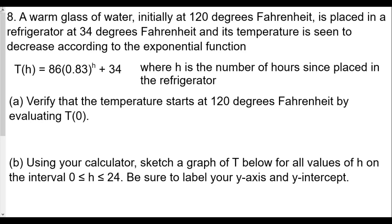A warm glass of water initially at 120 degrees Fahrenheit is placed in a refrigerator at 34 degrees Fahrenheit and its temperature is seen to decrease according to the exponential function T(h) = 86(0.83)^h + 34, where h is the number of hours since placed in the refrigerator. Verify the temperature starts at 120 degrees Fahrenheit by evaluating T(0). We're just going to plug in the 0 value for h. So T(0) = 86(0.83)^0 + 34. Any number to the 0 power except for 0 is equal to 1, so we get 86 times 1 plus 34, which is 86 plus 34, and that's equal to 120 degrees.